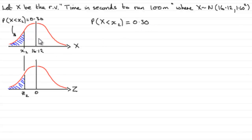And that means that if I add this to my diagram here on the standardized normal distribution, the probability of being less than Z2, that must be the same as what we've got here, 30%.